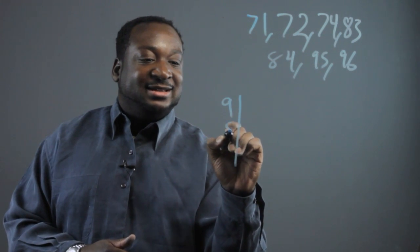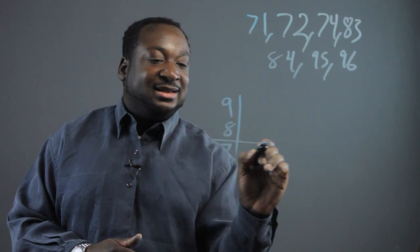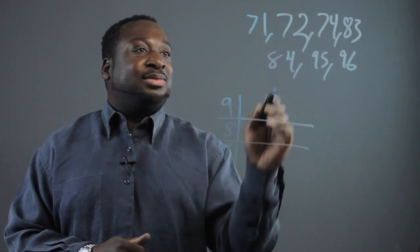So we have our 90, 80, 70, and then we're going to plot the different scores.